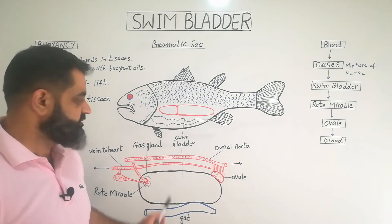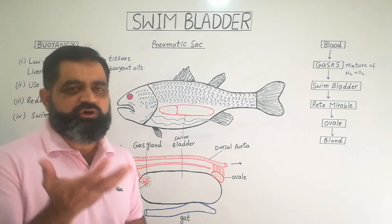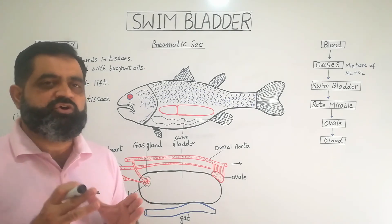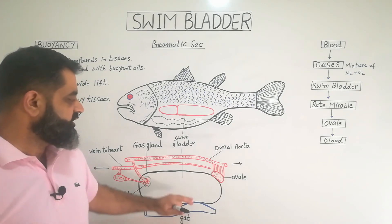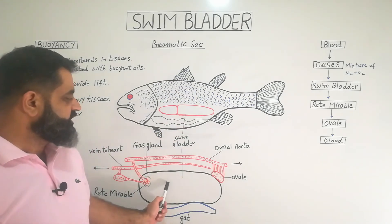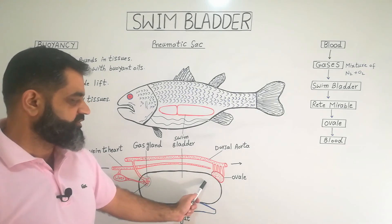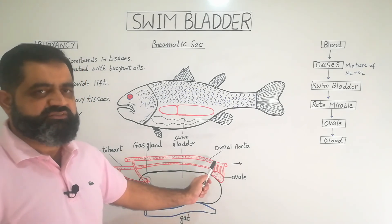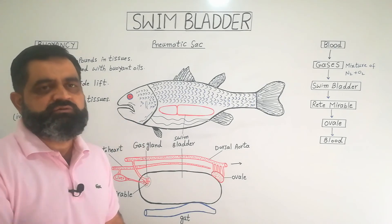When a fish needs to float in the water, oxygen gas from the blood diffuses into the swim bladder, which fills up with gases — especially oxygen and nitrogen. In this way, the density of the fish reduces and the fish floats. When the fish wants to sink, it removes gases from the swim bladder. To remove gases, there is a structure just behind the swim bladder known as the ovale. The ovale absorbs the gases and sends them back into the blood vessels. The swim bladder becomes empty, the density of the fish increases, and the fish sinks.